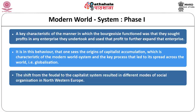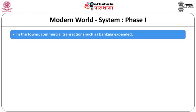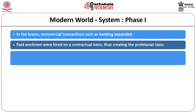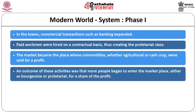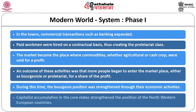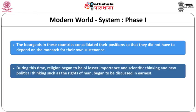The shift from feudal to capitalist system resulted in different modes of social organization. Where traditionally there were serfs paying feudal taxes, now there were wage laborers, tenant farmers, and enclosure farming for cash crops. In towns, commercial transactions such as banking expanded, paid workmen were hired on a contractual basis creating the proletariat class, and the market became the place where commodities were sold for profit. Capitalist accumulation strengthened the position of Northwestern European countries, and scientific and new political thinking came to acquire center stage, compatible with bourgeois ideology.